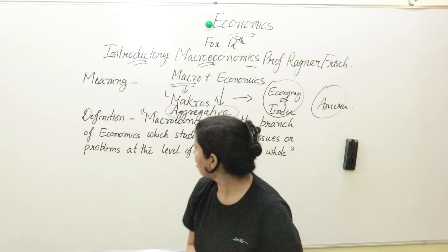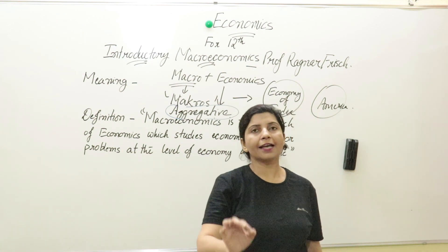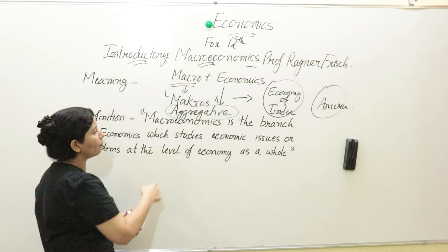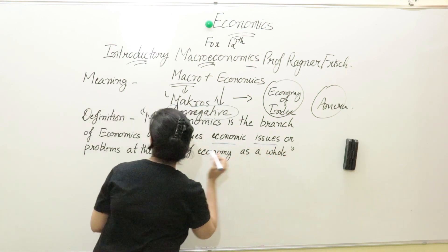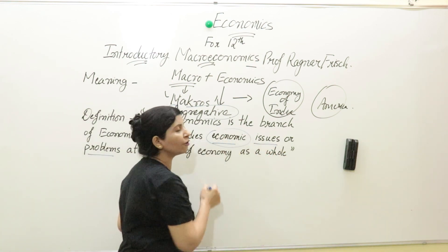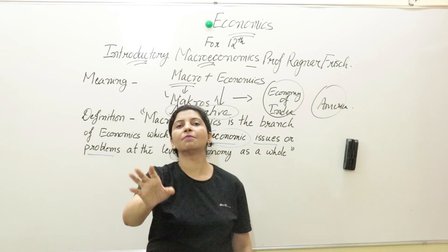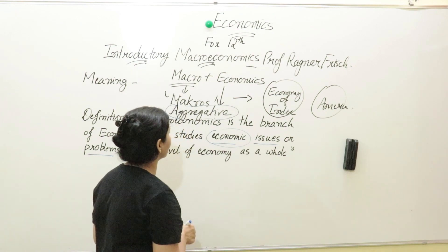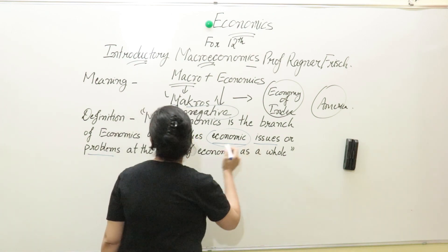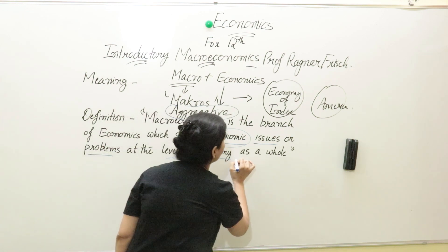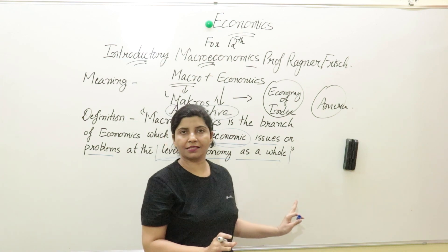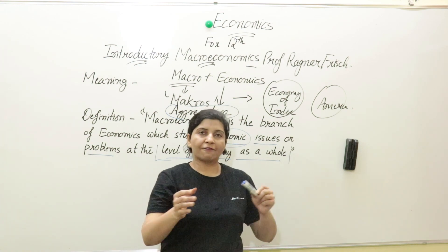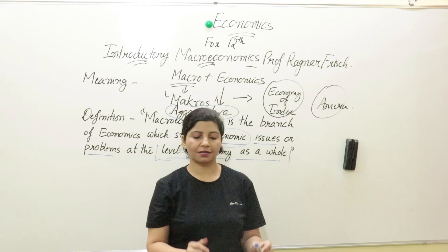Macroeconomics is the branch of economics which studies economic issues and problems at the level of the economy as a whole. 'Economic' refers to anything related to money — monetary issues are economic issues. 'Economy as a whole' means we study total aggregates like national income and GDP. So under macroeconomics, you study these broad, aggregate-level concepts.